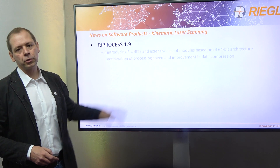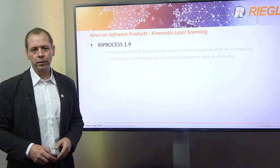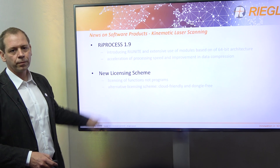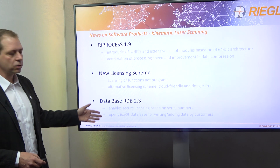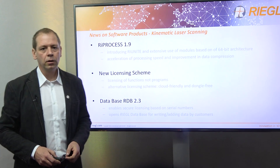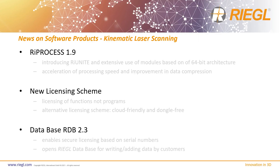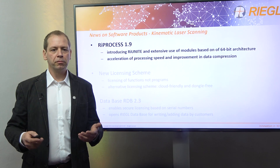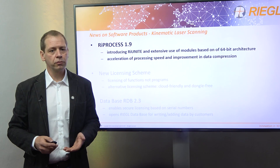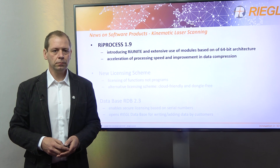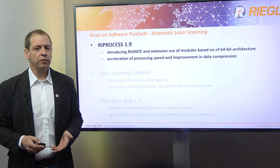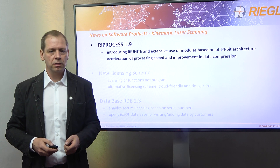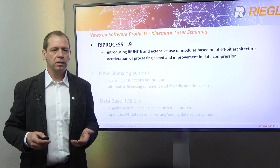First of all, the introduction of our Process version 1.9, a new licensing scheme, and our new database system RDB 2.3 with the associated programming library RDB lib. Let's start with the discussion about the concept of RAI Process 1.9 and the introduction of RAI Unite and the number of modules which are now based on a 64-bit architecture. I will also briefly elaborate the benefits in respect to processing speed acceleration and improvements in data compression.